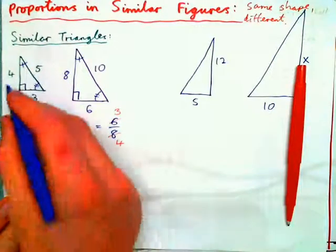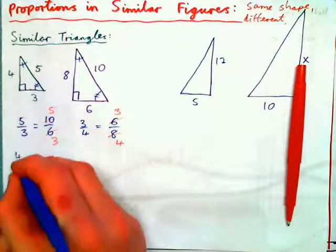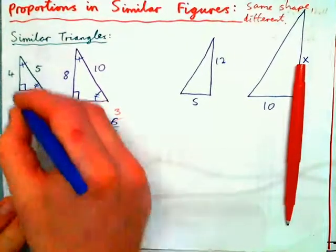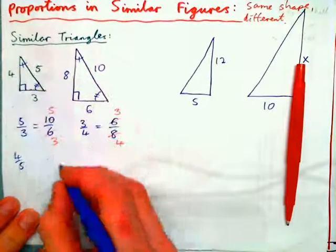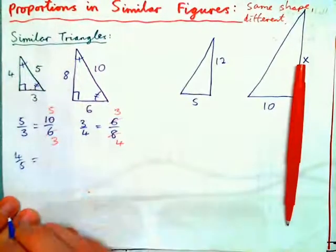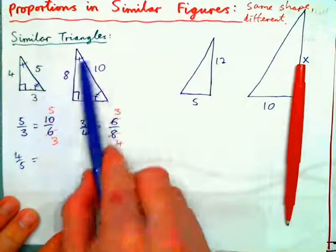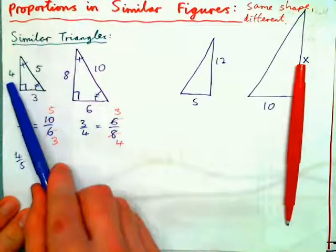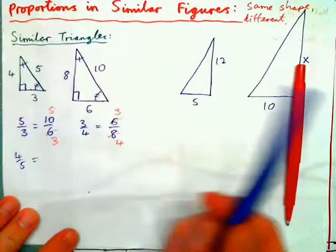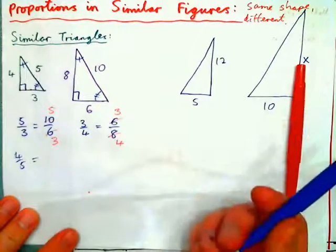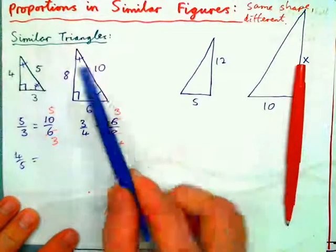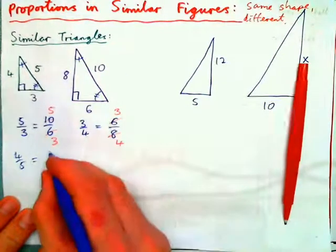You could also do 4 over 5 equals 8 over 10 — this side over this side with the larger triangle.